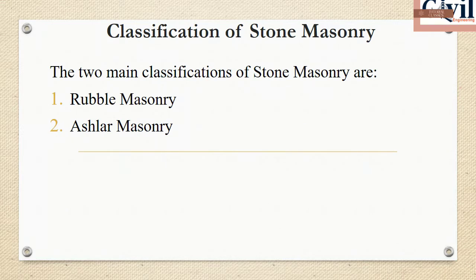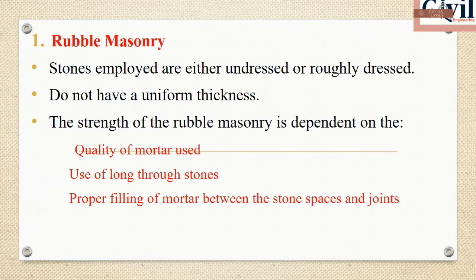The first classification is rubble masonry and the second one is ashlar masonry. In rubble masonry, we use undressed or roughly dressed stones.